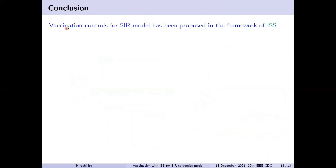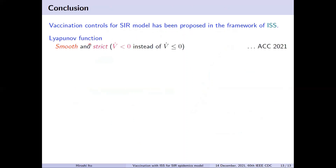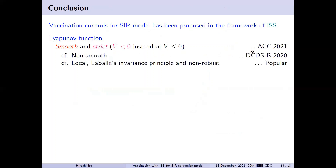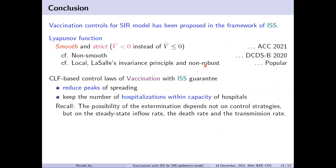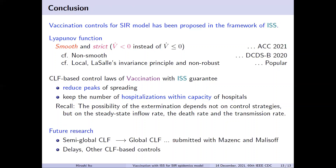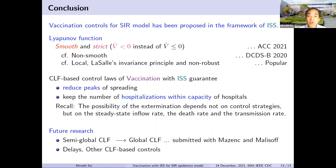In this talk, I have proposed vaccination control rho for the SIR model in the framework of ISS. I employed the Lyapunov function reported in ACC 2021. The employment is crucial since it is differentiable and its strictness is necessary for obtaining the robustness guarantee, for which the invariance principle is useless. The proposed control rho is useful for reducing peaks of disease infection and keeping hospitalizations within hospital capacity. Further development includes use of another Lyapunov function reported more recently, considering delays, and employing other CLF-based control formulas. Thank you for your attention.